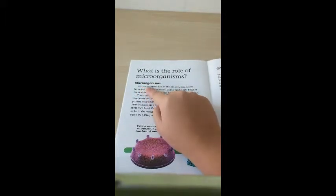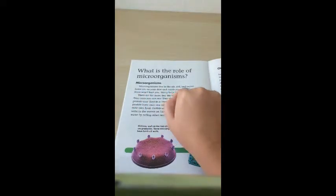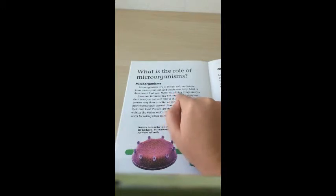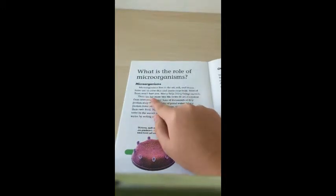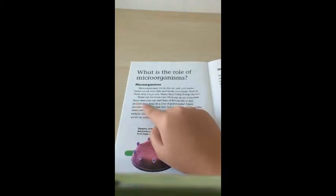What is the role of microorganisms? Microorganisms. Microorganisms live in the air, soil, and water. Some are on your skin and inside your body. Most of them won't hurt you. Many help living things survive. There are far more tiny life forms in an ecosystem than the ones you can see.